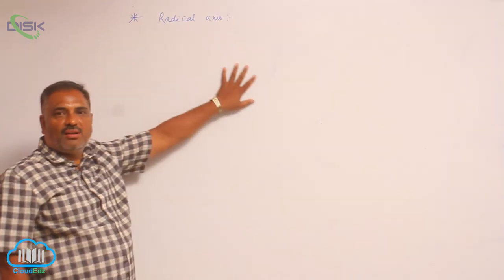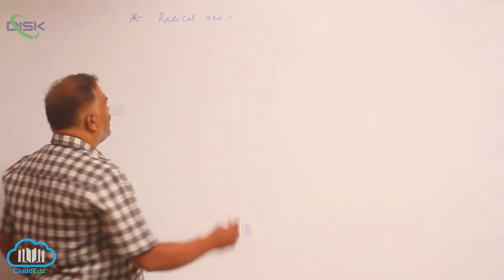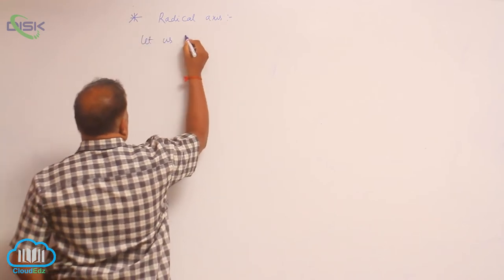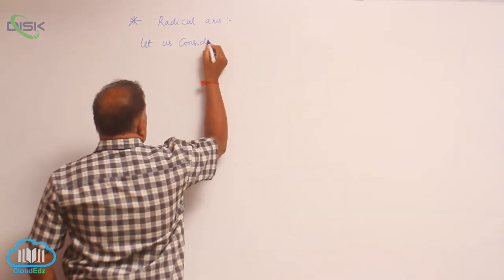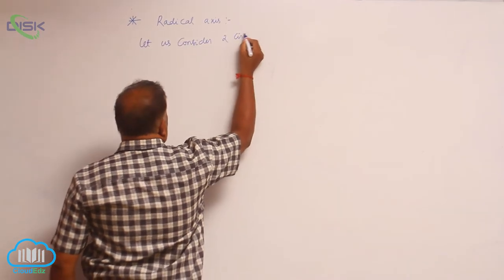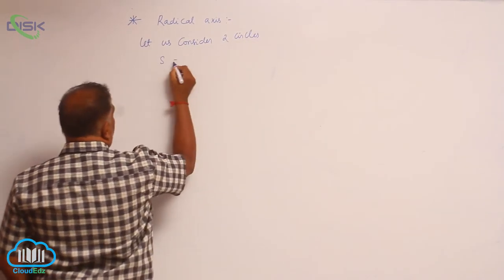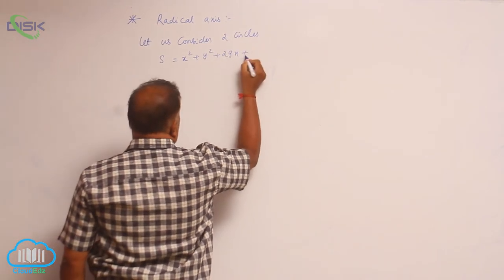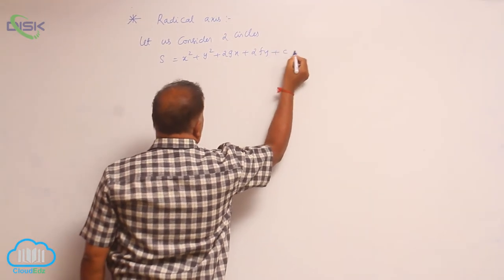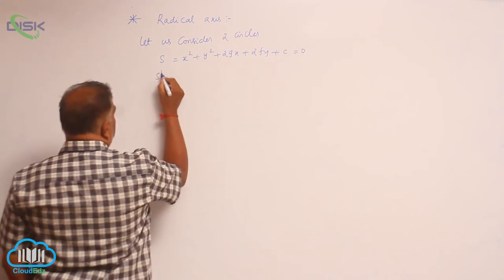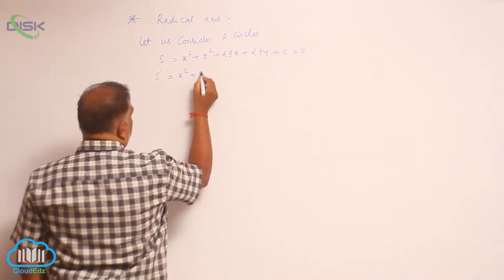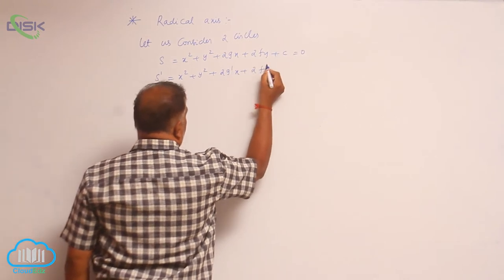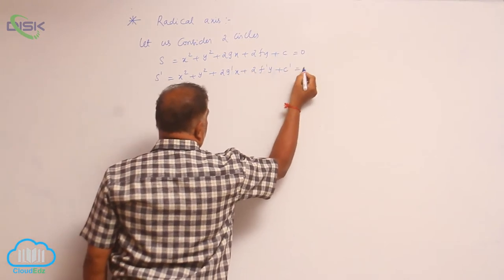We will discuss a new concept called Radical Axis. Consider two circles: S = x² + y² + 2gx + 2fy + c = 0 and S' = x² + y² + 2g'x + 2f'y + c' = 0.